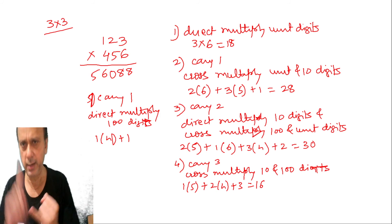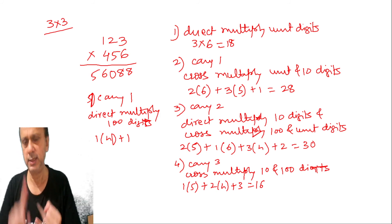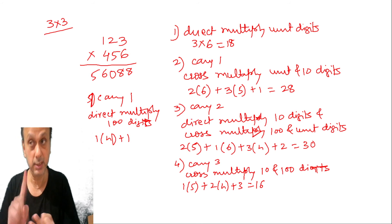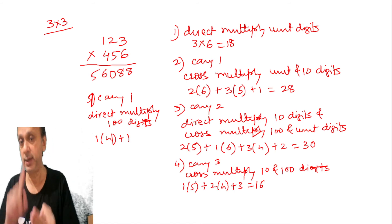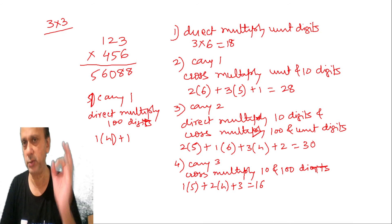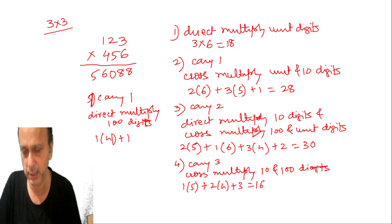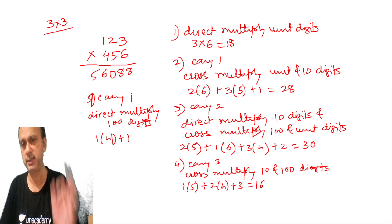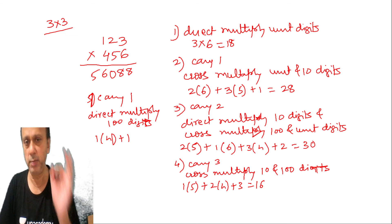First step: direct multiply unit digits. Second step: cross multiply unit and 10 digits. Third step, the important central step: direct multiply 10 digits and cross multiply 100 and unit digits at the same time. Step number 4: cross multiply 10 and 100 digits. And step number 5: direct multiply 100 digits. Just follow this method for 3x3 multiplication and I can assure you will save your valuable 20-25% more time that will help you solve another problem.